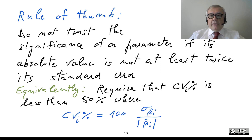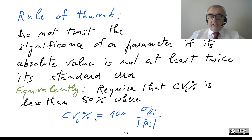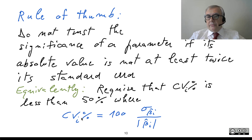If a parameter's absolute value is not at least twice the standard error, you do not trust that parameter as real. An equivalent way of formulating this rule of thumb is to look at the so-called percent CV. CV stands for coefficient of variation, and the percent coefficient of variation is 100 times the ratio between the standard error and the absolute value of the parameter.